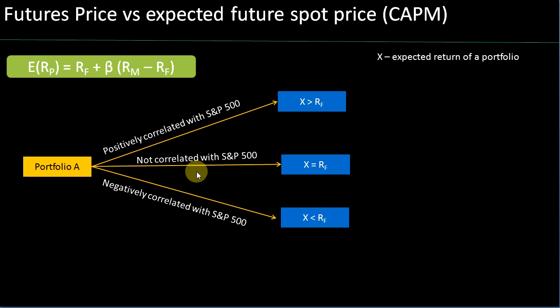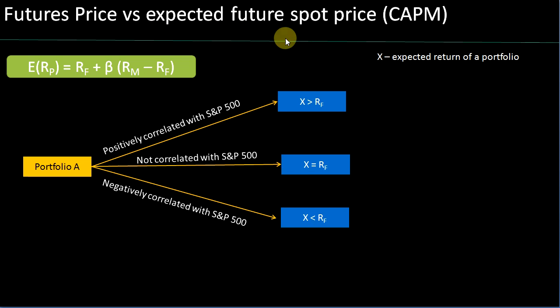If you are not correlated with the S&P 500 or with the market, then your beta is zero, and in that case your expected return will simply equal the risk-free rate. Now we are going to discuss this same framework with a formula showing how you can link the futures price with the expected future spot price — how these two can vary based on the expected return of the portfolio and the risk-free rate.